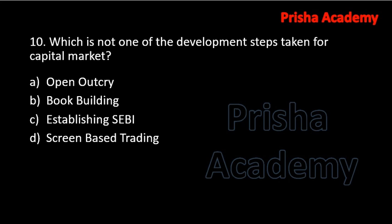Next question: which is not one of the development steps taken for capital market? Options are open outcry, book building, establishing SEBI, and screen-based trading. The answer is open outcry, because open outcry was removed and screen-based trading was started in its place. Open outcry was the system where trading took place based on hand signals, so it was removed to improve transparency in the market.